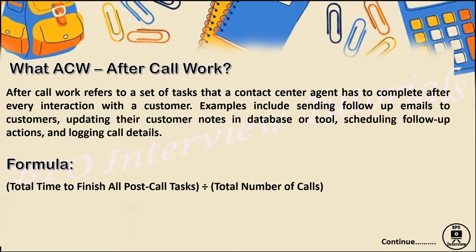The work done during that particular period is ACW — after call work. The formula for ACW is: total time to finish all post-call tasks — such as tagging, email drafting, and any other tasks — divided by the total number of calls. These are the most important concepts to remember. Always have the abbreviations ready, understand the concepts clearly, and know the formulas. AHT and ACW are key KPIs for a team lead or operations team lead, and also for associates, since they need to maintain these as well.